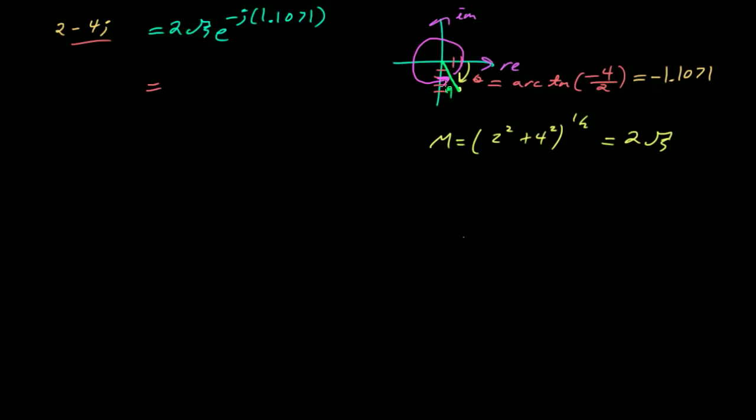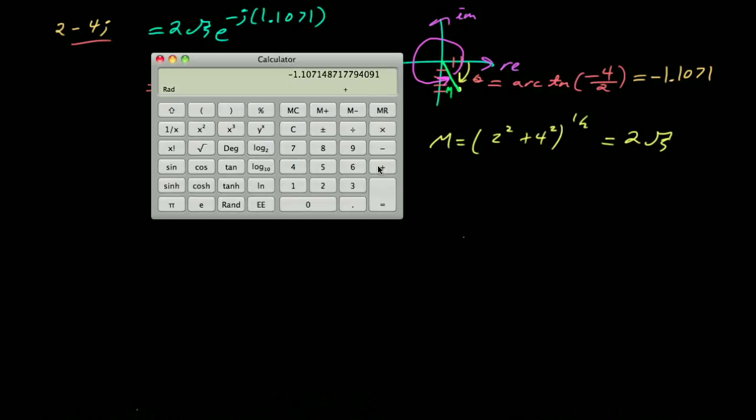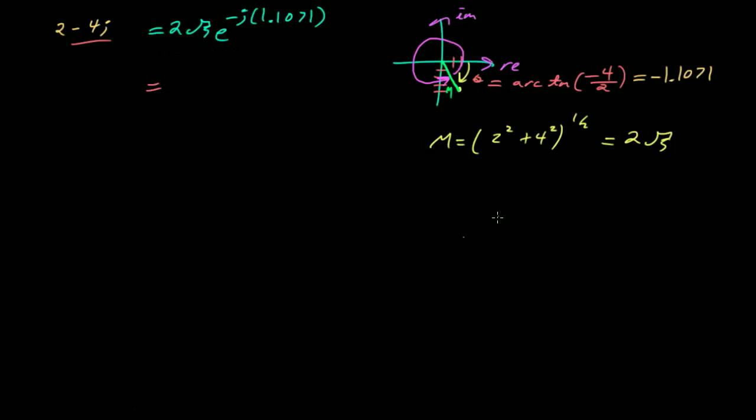So let me go ahead and get the calculator back. And let's say I just add 2 times pi, close paren, and 5.1760, so I'm just going to write, that is 2 root 5 e to the j 5.1760.